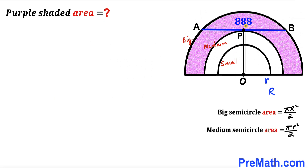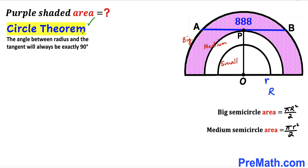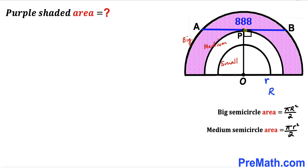I have connected the point of tangency P with center O. Recalling the circle theorem: the angle between the radius and the tangent line will always be exactly 90 degrees. So angle OPB is 90 degrees, since AB is the tangent line and OP is the radius. This OP is the radius of the medium semicircle, so OP equals lowercase r.